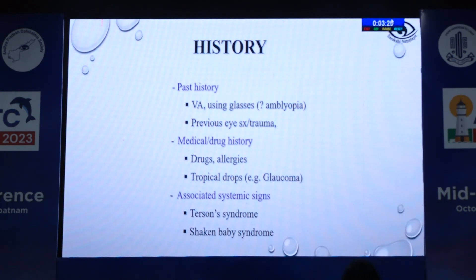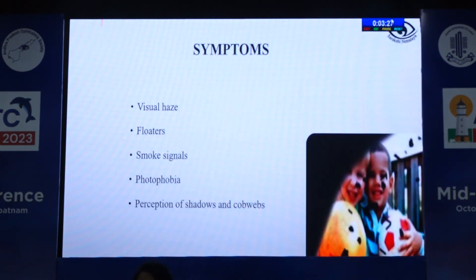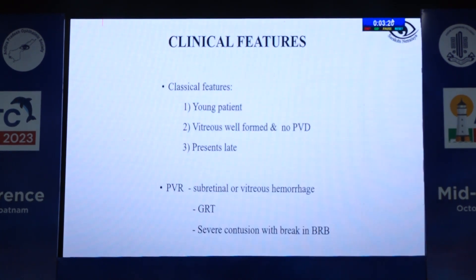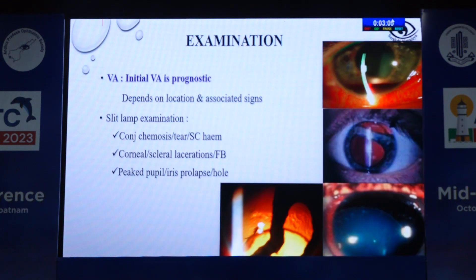Coming to history, we need to assess the patient's symptoms, which are the usual symptoms seen in other retinal detachment cases. Clinical features as discussed are more commonly seen in young patients with formed vitreous jelly and no PVD, who usually present late. On examination, visual acuity depends upon the location and the associated signs.